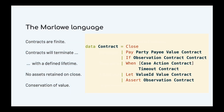Marlowe is represented as a Haskell data type. We have a Pay construct where a party makes a payment to a payee of a particular value, and then the contract continues with a continuation contract. We can go in two directions with an If construct — observe whether a particular observation is true or false, following the first contract if true and the second if false. The most complex construct in Marlowe is the When construct.